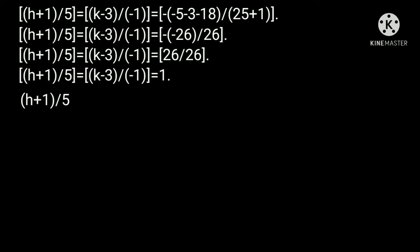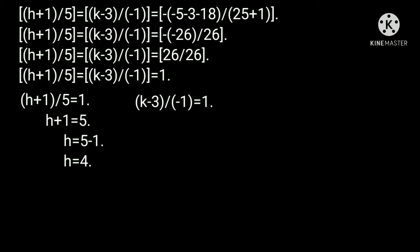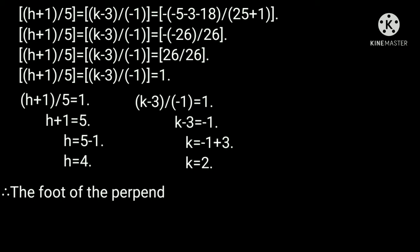From this, (h plus 1) by 5 equal to 1, then h plus 1 equal to 5, finally h equal to 4. And (k minus 3) by minus 1 equal to 1, so minus 1 plus 3 gives k equal to 2. Therefore the foot of the perpendicular (h, k) equal to (4, 2). This is our required problem solution.